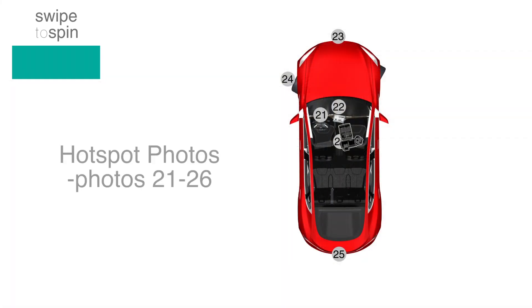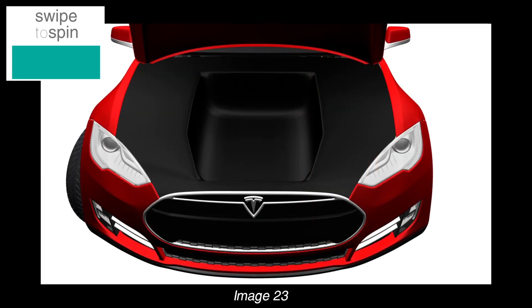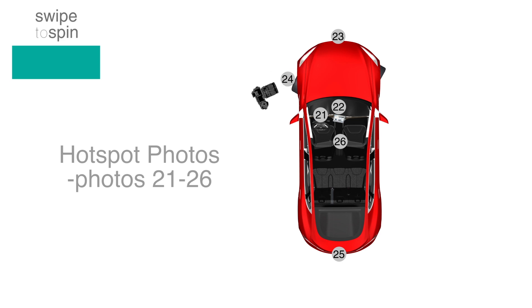Finally, take your hotspot photos. These will be photos 21 through 26. These photos will be displayed when the user clicks on a hotspot. In the following order, take these pictures.